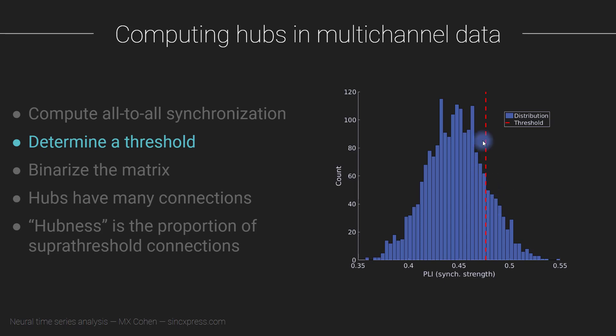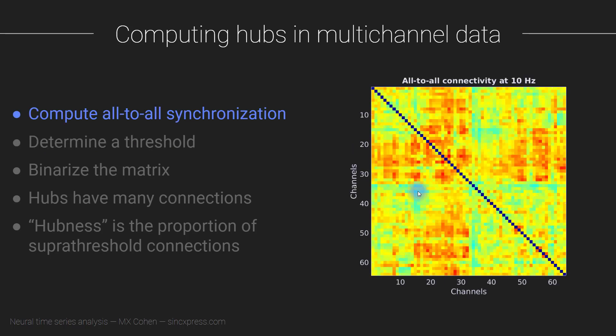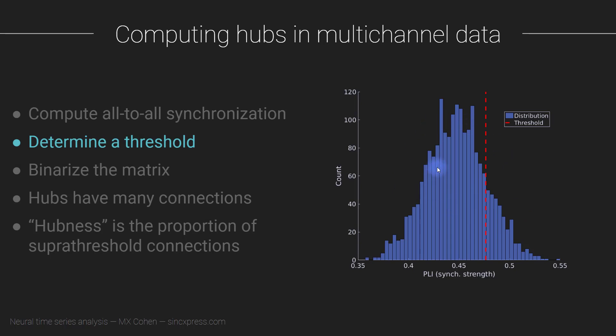Determining a threshold is always going to be a little bit arbitrary. This threshold is a parameter of the analysis you have to decide on. What I typically do is pick a threshold to be one standard deviation above the median of all the synchronization values. This distribution shows all the unique synchronization values - basically half of this matrix - and then you come up with some threshold.